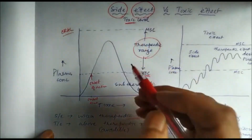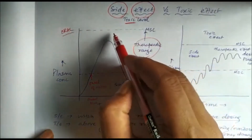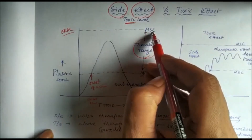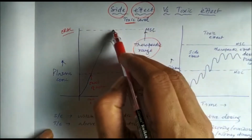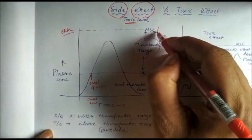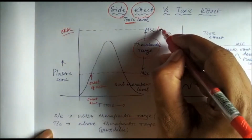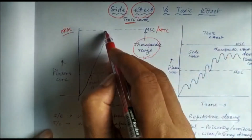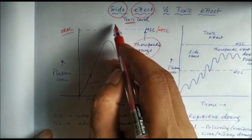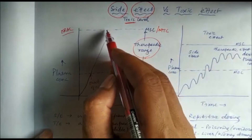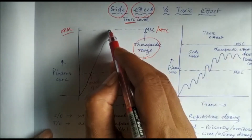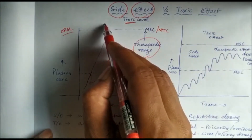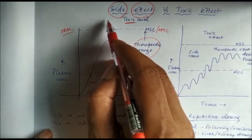When the drug concentration is above the maximum safe concentration — also called the minimum toxic concentration — whatever effects occur are called toxicity or toxic effects. So above the therapeutic range we see toxic effects, and within it we see side effects.